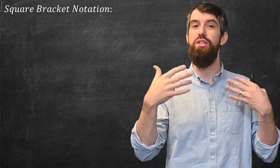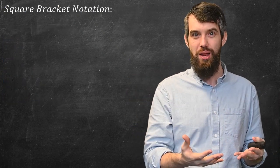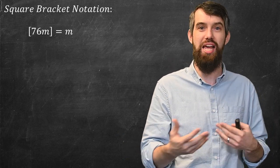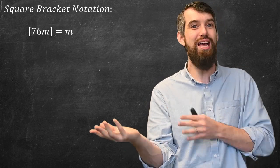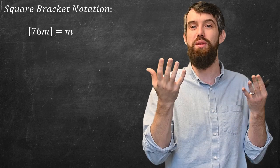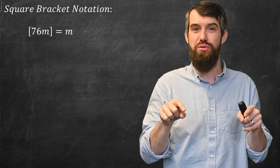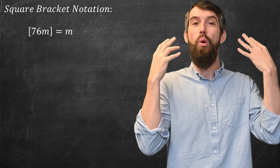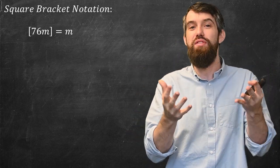One other piece of notation is called square bracket notation. Basically, the way square bracket notation works is that if you have some particular quantity, like 76 meters, it just gets rid of the 76 and only says whatever the units are, it says meters. So this square bracket notation is just notation to say, I don't care about the magnitude. I just care about what is the unit of this thing that I'm studying.